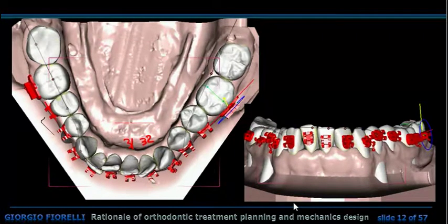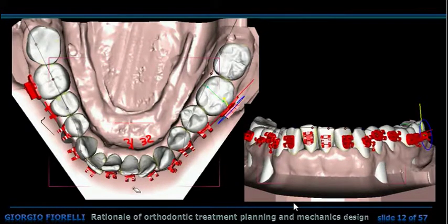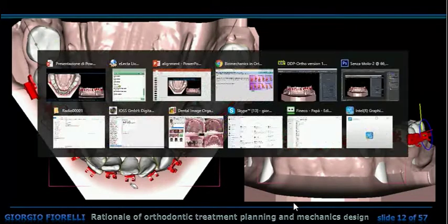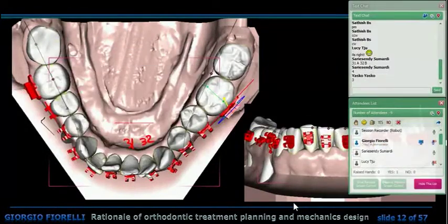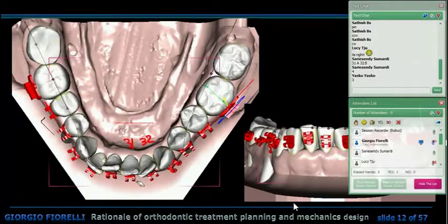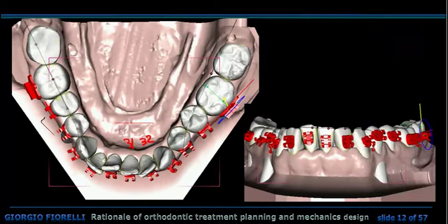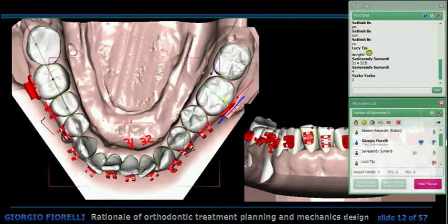With this in mind, please tell me which are the forces and moments. My recommendation is that you always start with B — in this case, with bracket 32. Which is the direction of the moment you will have on 32: clockwise or counterclockwise?